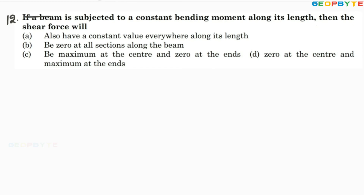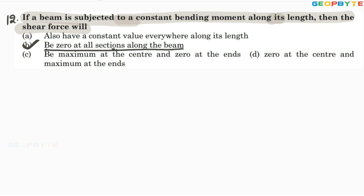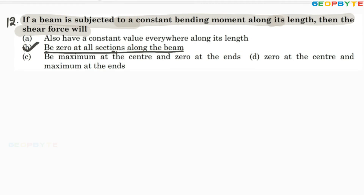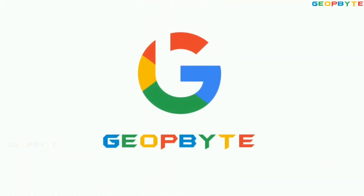Twelfth problem: if a beam is subjected to a constant bending moment along its length, then the shear force — this is the same concept discussed earlier. When the beam is subjected to constant bending moment, the shear force is zero along the entire length. Option B is correct. I am concluding this video. Please go through all these problems, and if you need any clarification, drop a message — I will answer within 24 hours. Thank you for watching. Have a great day. Geobyte.